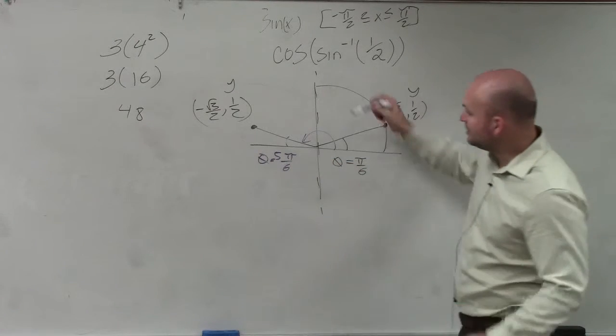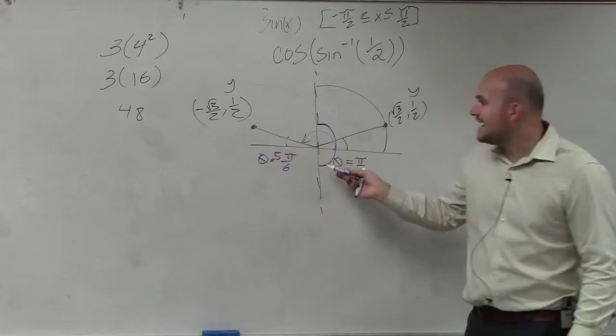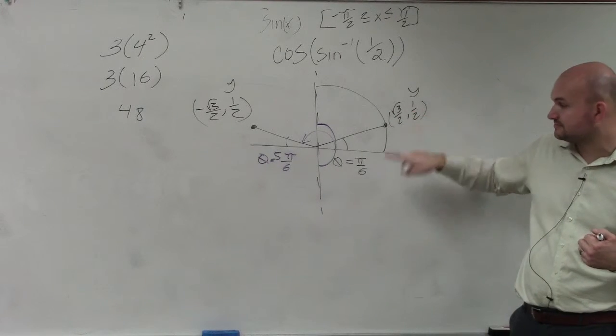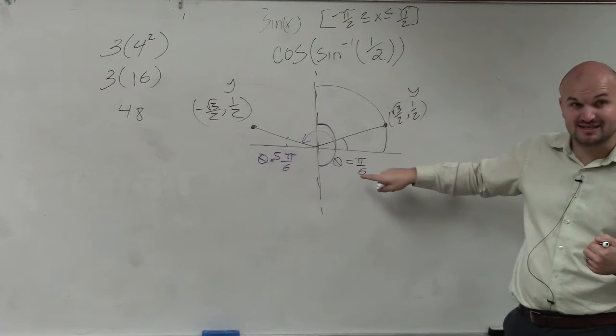The easiest way to do that is I just kind of draw this little thing right there. The angle has to fall between these two. So what is my only angle that works? Pi over 6, right?